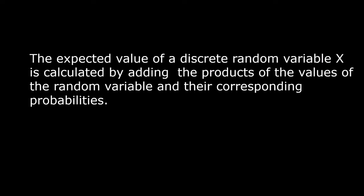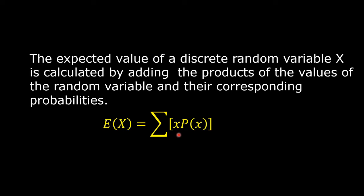Today's lesson is expected value of a discrete random variable. The expected value of a discrete random variable X is calculated by adding the products of the values of the random variable and their corresponding probabilities. The formula is: the expected value of X equals the sum of x times P(x), where lowercase x represents each specific value and P(x) the corresponding probability.